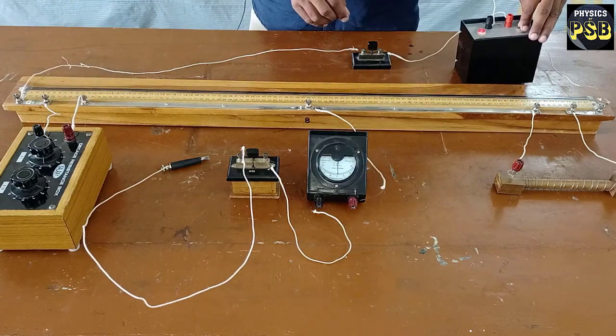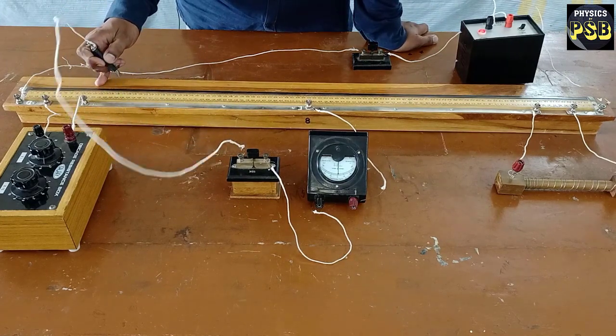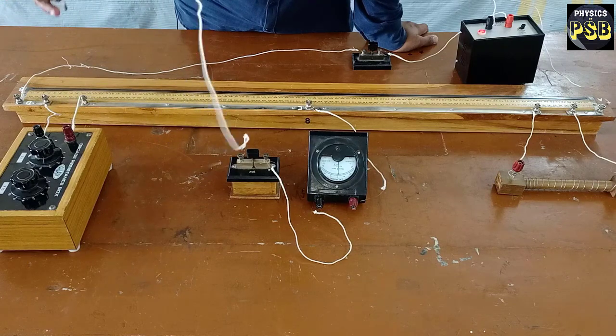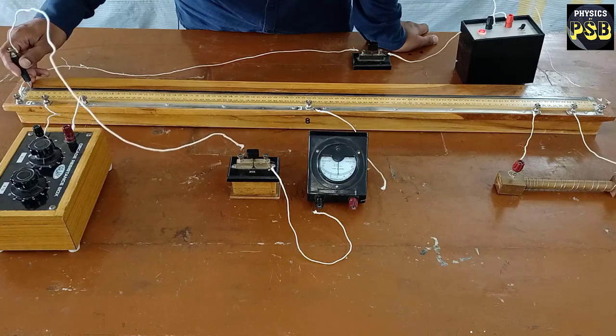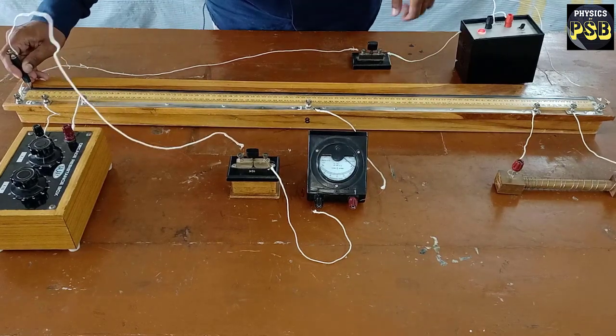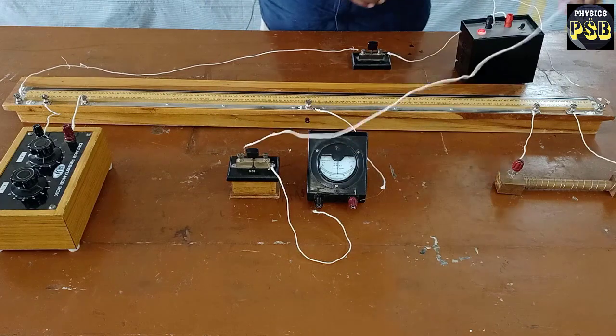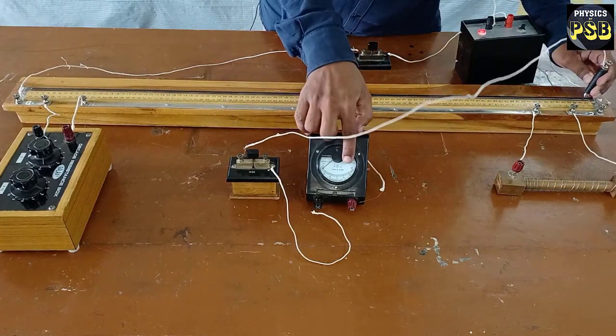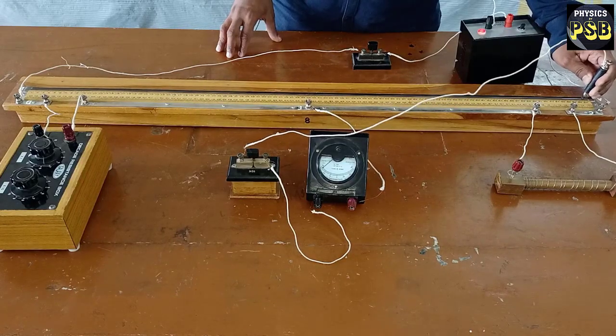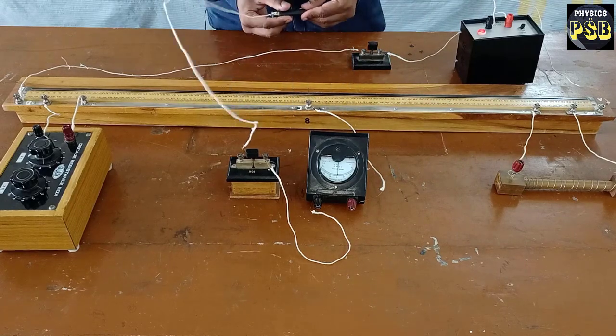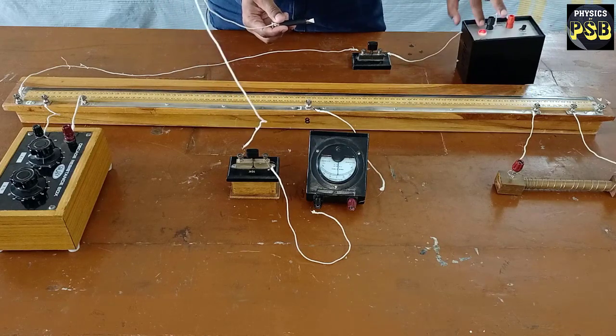An unknown resistance P is connected to gap G1. Now I will pass the current to check whether the connection is correct or not. We press the jockey on one end. When I press on the right side, the deflection must be towards the opposite side. If it is so, the connection is correct. If the deflection is in the same side, you need to interchange the connection.